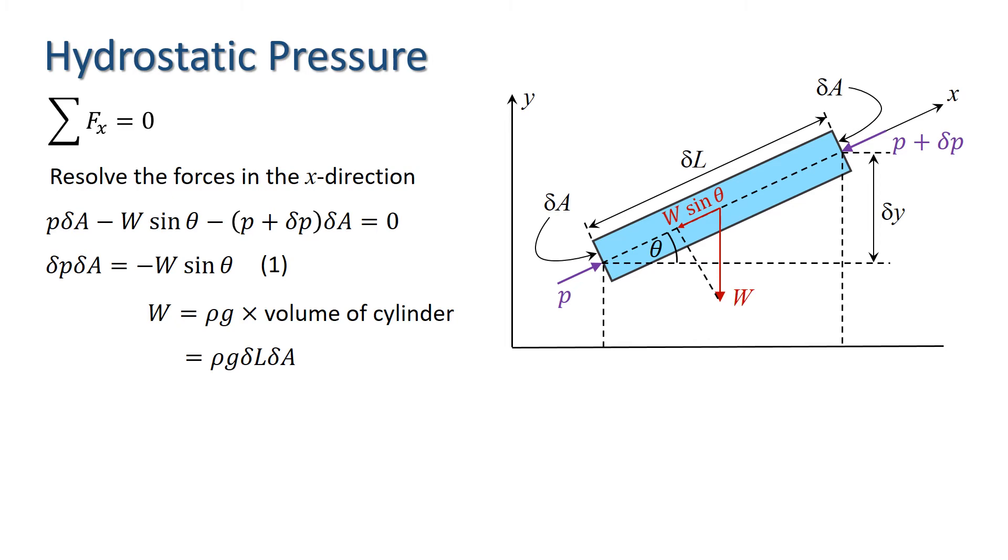Substituting W into equation one and dividing both sides by delta A, we get delta P equals minus rho G times delta L times sin theta. If we look at the diagram, we can see that sin theta is delta Y over delta L, so delta P can be written simply as minus rho G times delta Y.